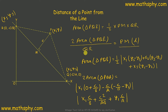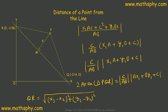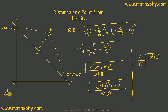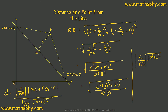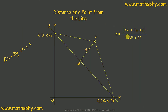Now, d = 2 × area(PQR) / QR. The (c/ab) terms cancel, leaving d = |ax1 + by1 + c| / √(a² + b²). This confirms the formula we stated at the beginning: d equals modulus of (ax1 + by1 + c) over square root of (a² + b²).